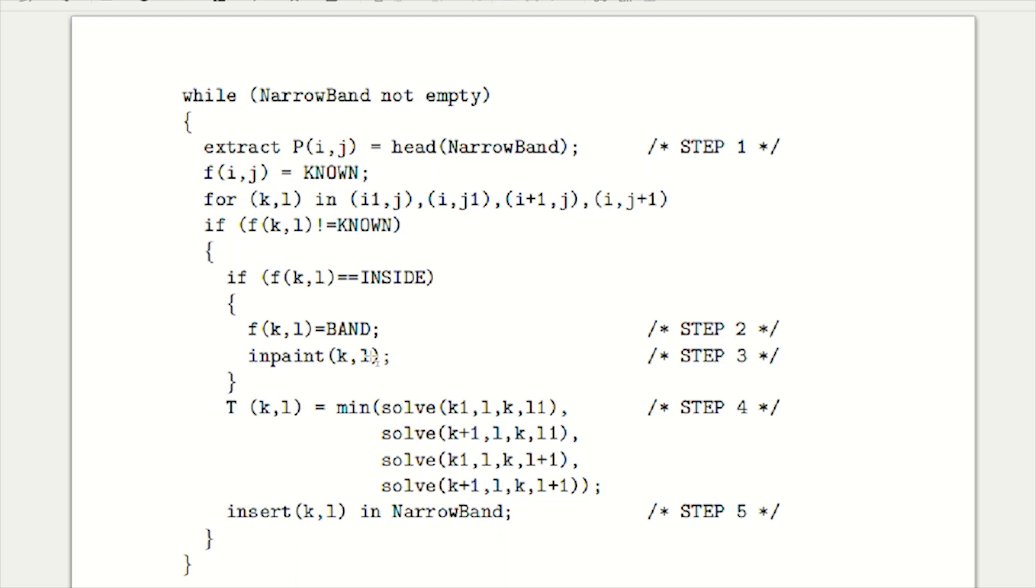To do this, we solve the eikonal equation using finite difference approximation. We do this for the neighbors in four different quadrants, as written here—k-1, k+1. We use these four different quadrants, take the minimum, and save it. The last step is to reinsert (k, l) with its new T value into the heap.